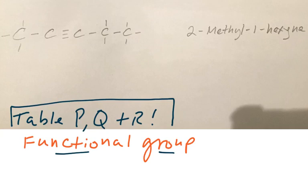So let's say you have to name this guy over here. The first thing you do from experience, we count the longest number of carbons. So we see we have one, two, three, four, five carbons. What's the prefix of five? The prefix of five is pent.